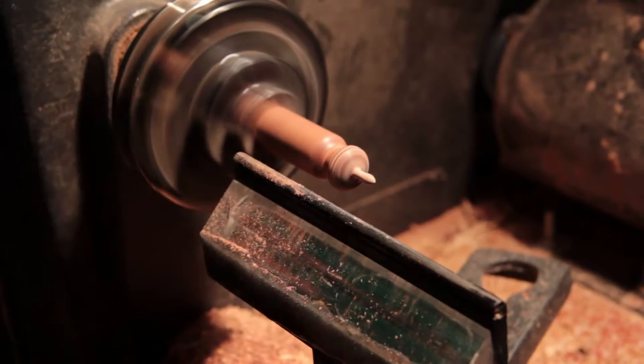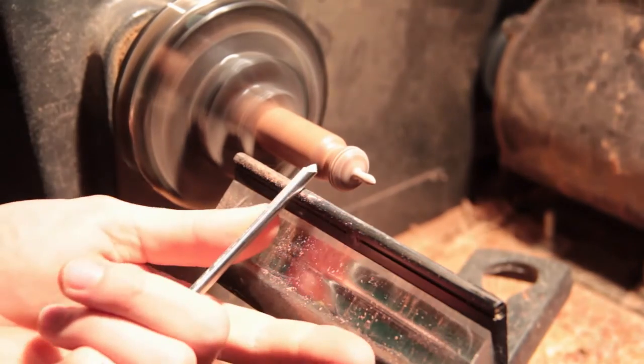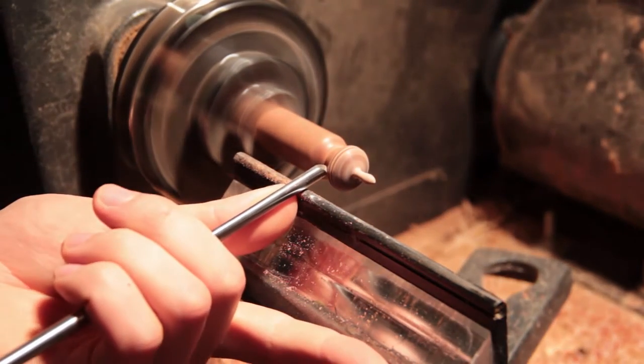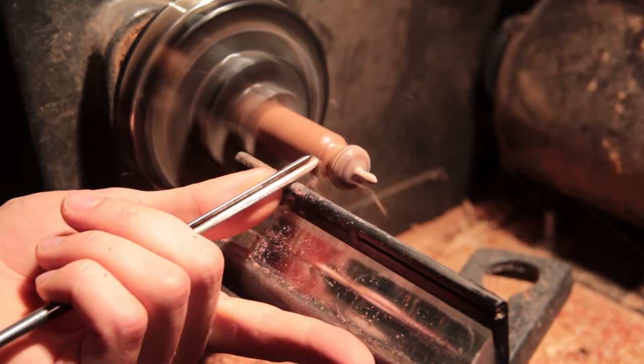The only downside is it gets the chisel a little bit hot. You can see I have some smoke coming off it there. But the reason I like doing it that way is that you get very little tear out because you're not so much cutting off fibers as just separating them a little bit.